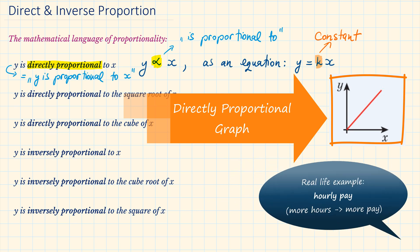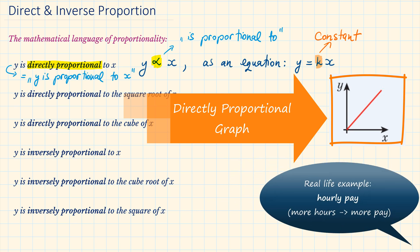A real life example of this would be: if someone only gets paid per hour, their pay is directly proportional to how many hours they have worked. If they worked more hours, they get paid more. If they work less hours, then they get paid less.